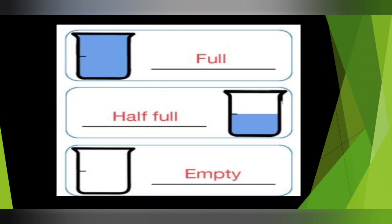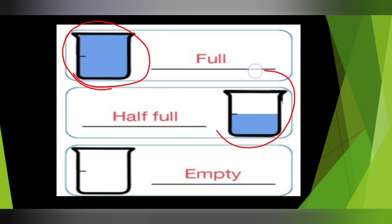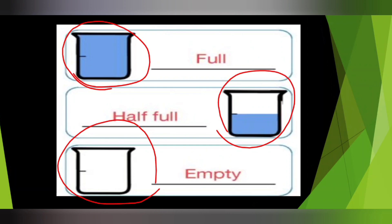In the first container the water is full. In the second one the water in the container is half. And in the third one there is no water — that means the container is empty.